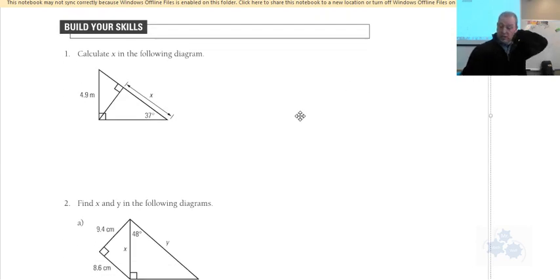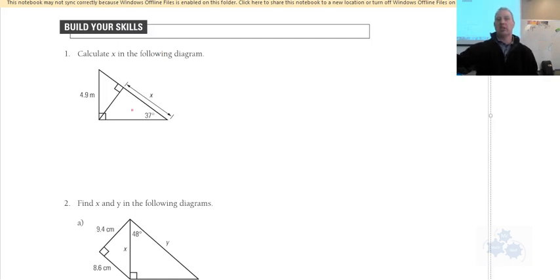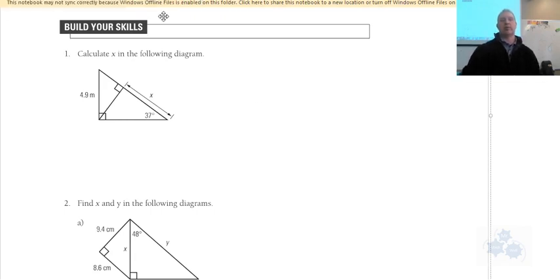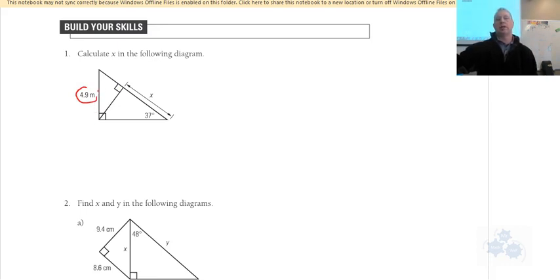Question number one is tricky because we can't solve for X right away — there are two things we need to figure out first. Looking at the triangle with X: we have 90°, 37°, but we don't have any side lengths, so we can't solve for X directly.